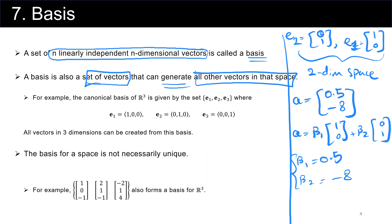Another example is the basis for the three-dimensional space. E sub 1 is [1, 0, 0], E sub 2 is [0, 1, 0], and E sub 3 is [0, 0, 1]. Again, this is a basis for the three-dimensional space.